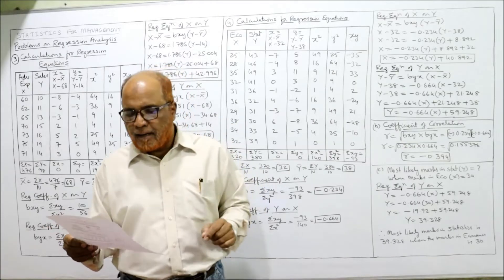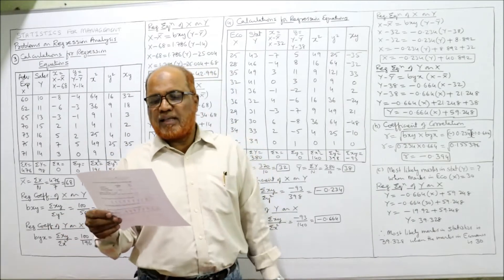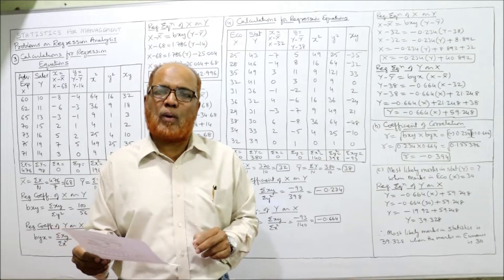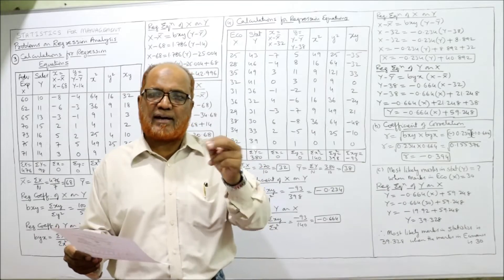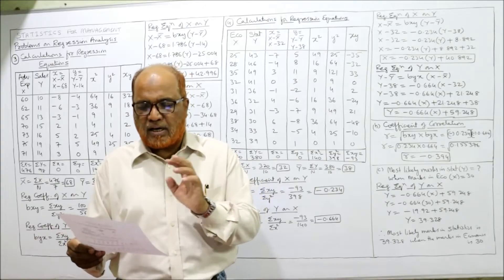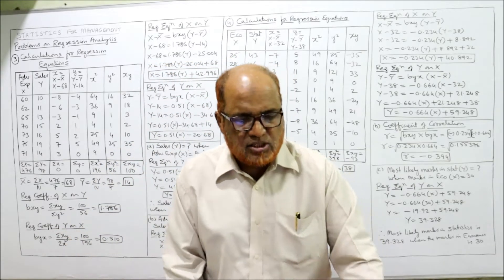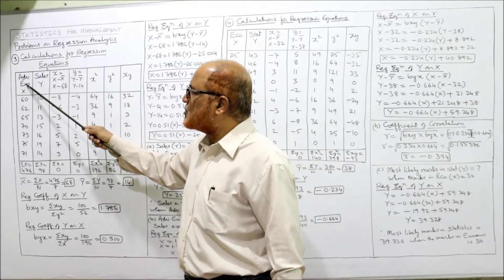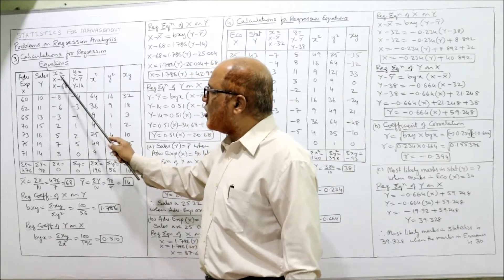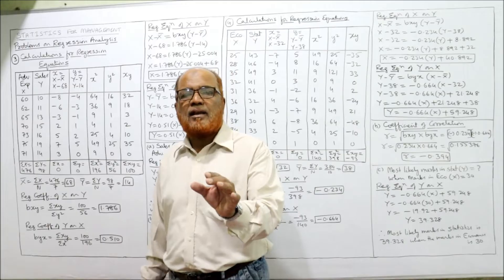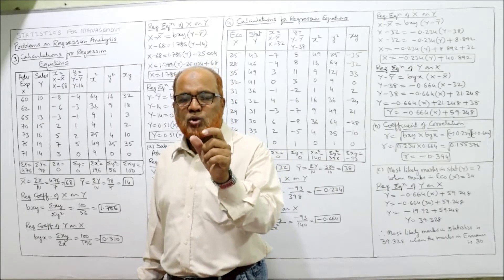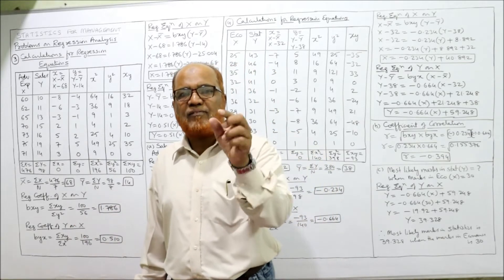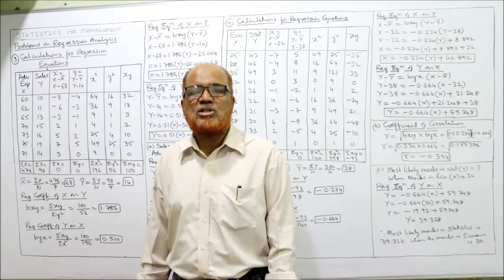We assume advertising expenditure is denoted as X and sales as Y. We calculate the regression equation of X on Y and Y on X, after which we can make the estimations. For the regression equations, we first need only columns X and Y to calculate the actual mean. If the actual mean is a whole number, take deviations from the actual mean; if it is a fraction, take deviations from the assumed mean.